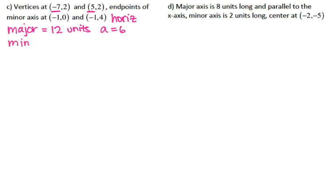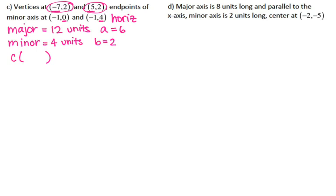I can also find the length of my minor axis using the same idea. Looking at my minor axis, it's my Y coordinates that are different — going from 0 to 4, that's four units, which makes B two. Now, where is my center? Your center has to be right in the middle of your vertices. The midpoint of −7 and 5 is −1. Another way to think about it: A is six, so going six units from −7 gives −1, and six units from 5 also gives −1. So my center is at (−1, 2).